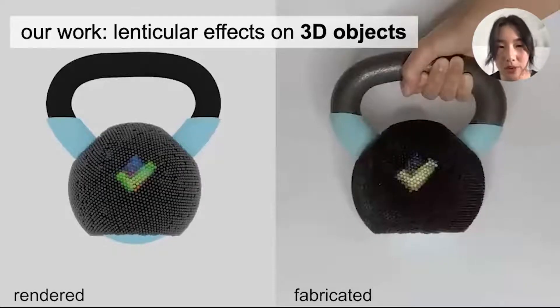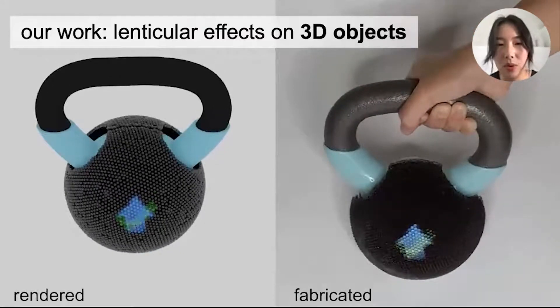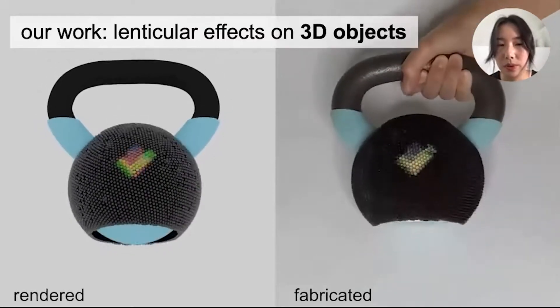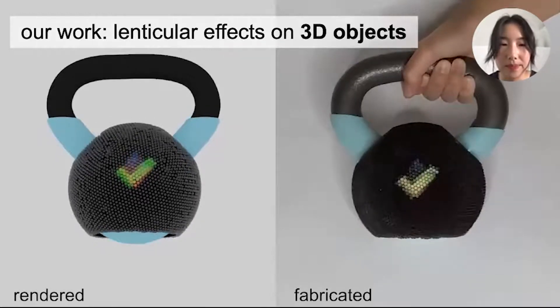And this kettlebell shell that helps to correct users' body pose during exercise. It shows an upward arrow when the user's arms are too low and a downward arrow when they are too high. The users will only see the check mark when they lift the kettlebell to the recommended height.